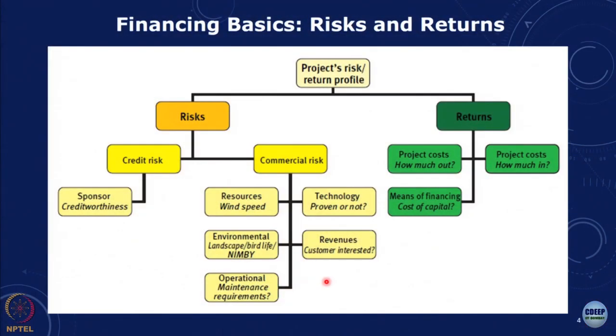Operational maintenance requirements also pose a risk: if there are additional O&M costs, shutdowns, or operational maintenance problems, this can be another source of risk. In terms of returns, there could be project cost overruns and delays, and we need to look at how much cost is incurred versus revenue coming in, as well as the mode and cost of financing. This gives an overall picture of the kinds of risks and returns.